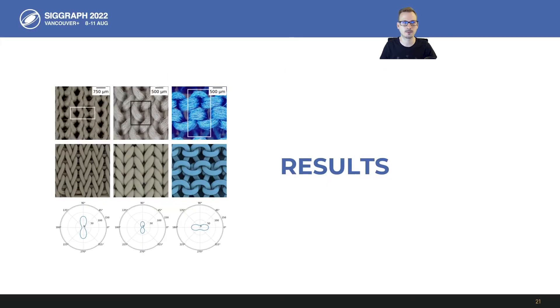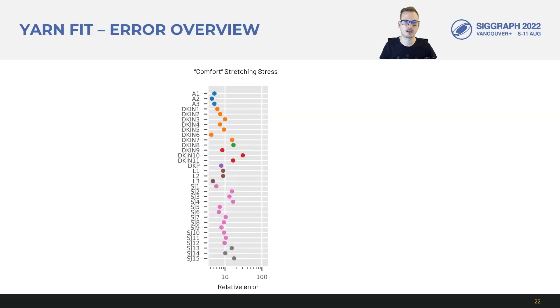Now we'll take a look at our fitting results. I'll start with an error overview of our yarn fits across all 33 fabrics. This is a plot of the error with respect to stretching stress and the errors are relative to the stress of the thin shell model in the comfort range. On the x-axis 10 means 10% relative error and the ticks are logarithmic. On the y-axis we have the pattern names.